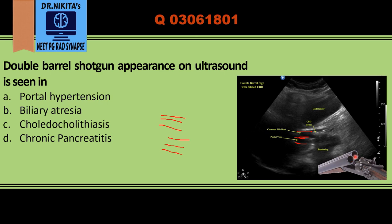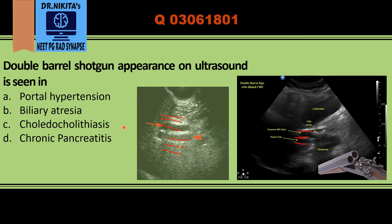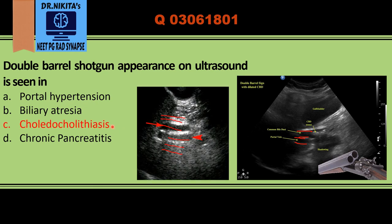The portal vein and CBD are almost the same size because of CBD dilatation, so any condition causing CBD dilatation will give this double barrel sign. In this case we see a CBD calculus showing posterior acoustic shadowing, because of which the CBD has become dilated and is giving the double barrel sign. So among the options, the double barrel sign is seen in choledocholithiasis — that is, CBD calculus.